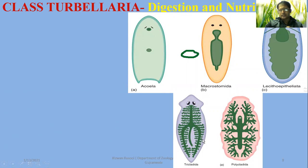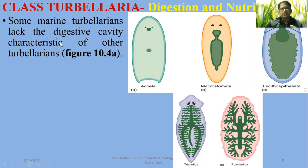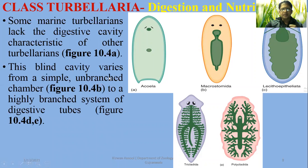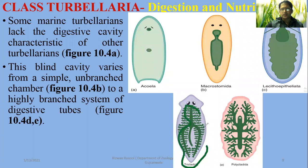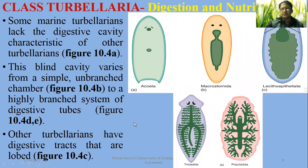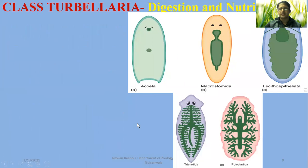Regarding digestion and nutrition, there are different orders in Class Turbellaria with different gut types. For example, in some orders the gut is a narrow tube lacking the digestive cavity of other Turbellarians. This blind cavity varies from a simple unbranched chamber. In the order Lecithoepitheliate there is a branched system of digestive tubes. In Tricladida, also including planaria, there are three branches of the digestive tract. In Polycladida there is also extensive branching. The digestive system has a single opening, but further variations are developed in different groups.